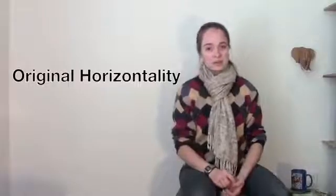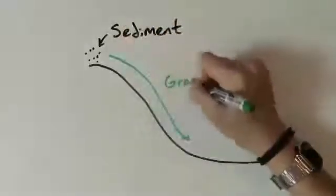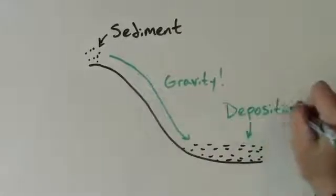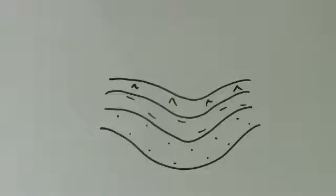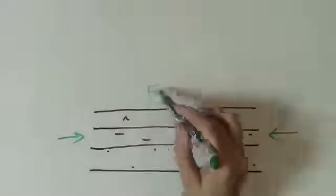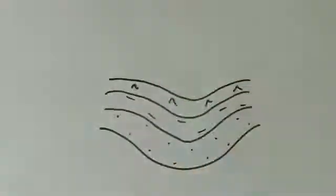We're going to start with original horizontality. Basically, it's what it sounds like. Originally, meaning when a sedimentary rock is formed, it's deposited or laid down in a horizontal, flat layer. But what if sediment is being deposited on a slope? Well, due to the effects of gravity, it will fall down and deposit in a flat layer at the bottom of the slope. And what if we see layers that are folded like this? Well, we know that due to original horizontality, they must have been flat-lying at first, and then were subjected to a force called a stress that causes the rocks to strain or bend.